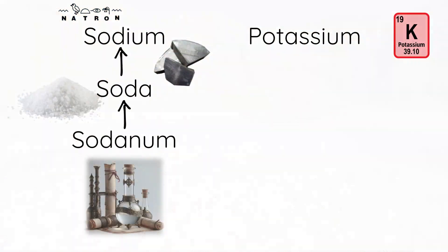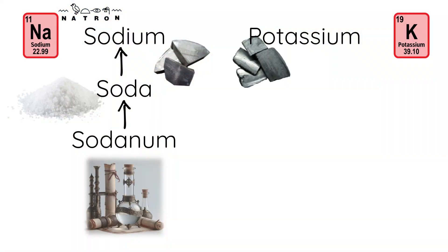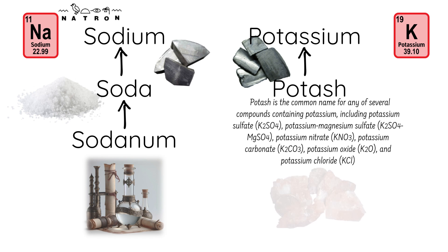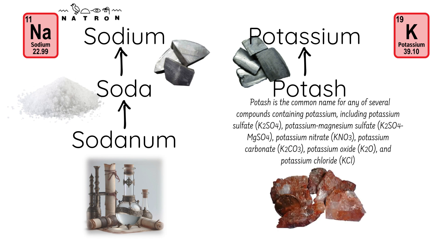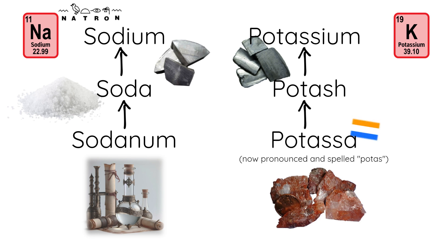On the other side, potassium is also a silvery-white metal that is soft enough to easily cut with a knife. The name potassium comes from potash, which refers to potassium compounds derived from wood ashes. The term potash comes from the Dutch word potassa. The symbol K comes from the Latin word kalium, which is derived from the Arabic word alkalia, meaning plant ashes.